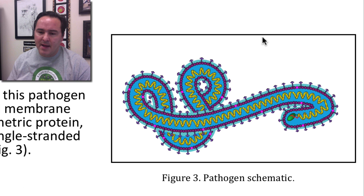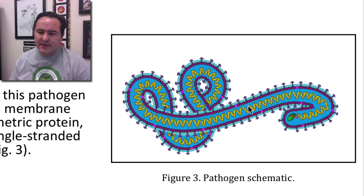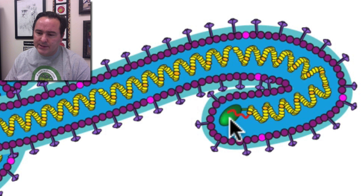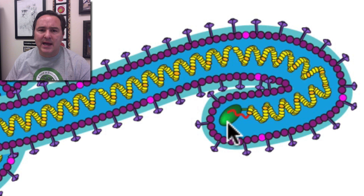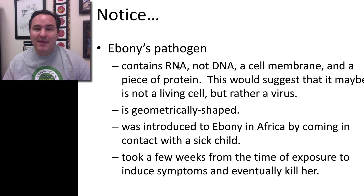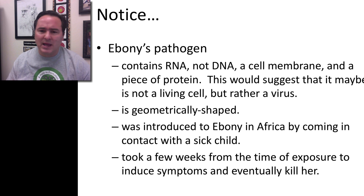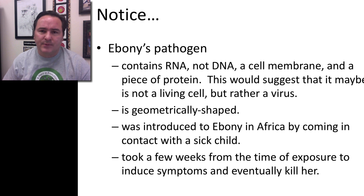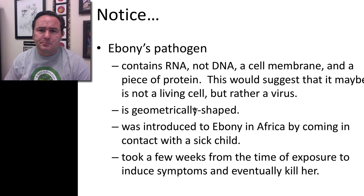Looking at a diagram of what they were seeing: there was this membrane in purple on the outside, then a yellow protein chain on the inside, then a small piece of RNA — nucleotide material — and then a green structure that appeared to be an enzyme that could copy RNA in some fashion. What should we notice? This pathogen contains RNA, not DNA. It has a cell membrane, but that membrane had characteristics that seemed more human-like. And it had that long piece of protein throughout. This suggests it's probably not a living cell — it's rather a virus.